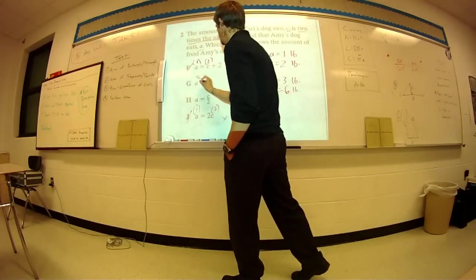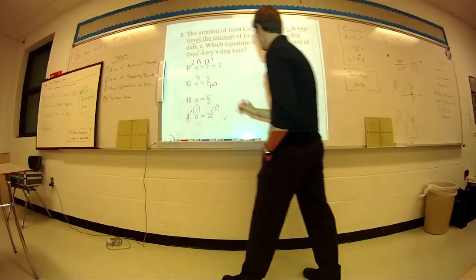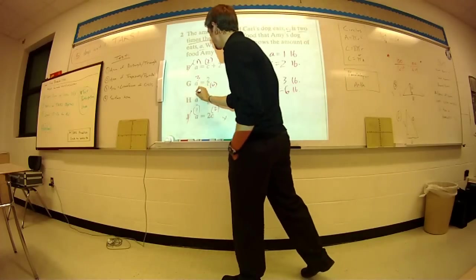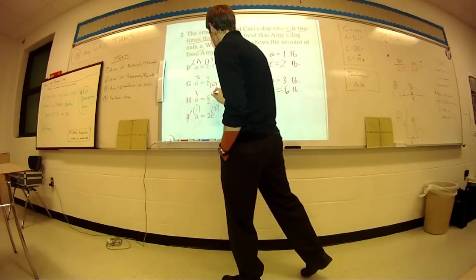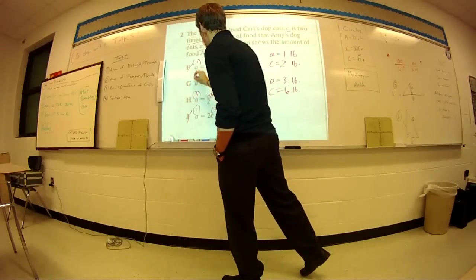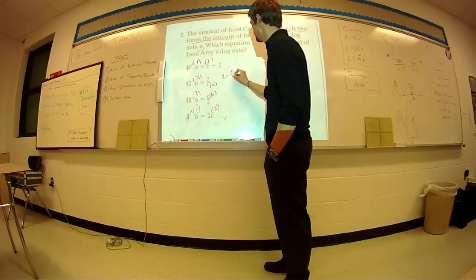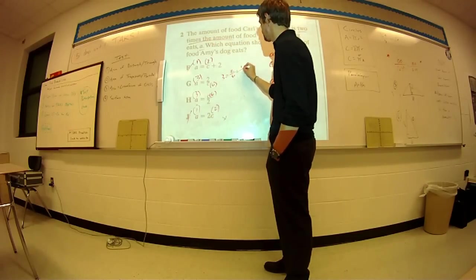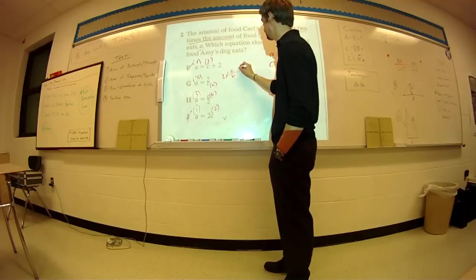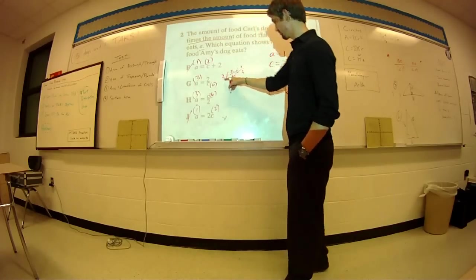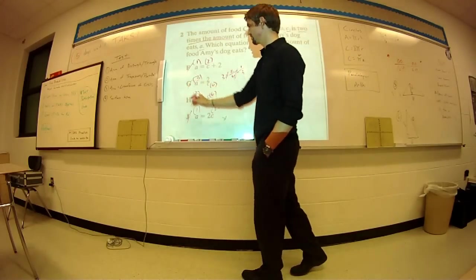Three pounds for A, and six pounds for C. It says that three equals two over six. No, two over six is like a third. Three does not equal a third. Well, those two equal each other. But three does not equal that, therefore we can eliminate G.